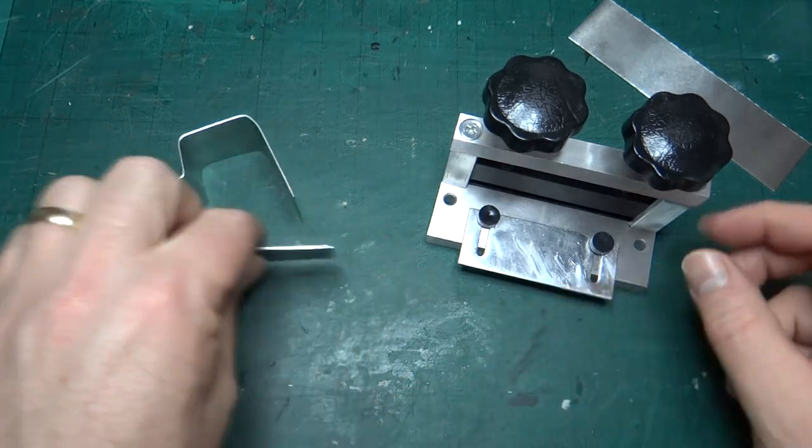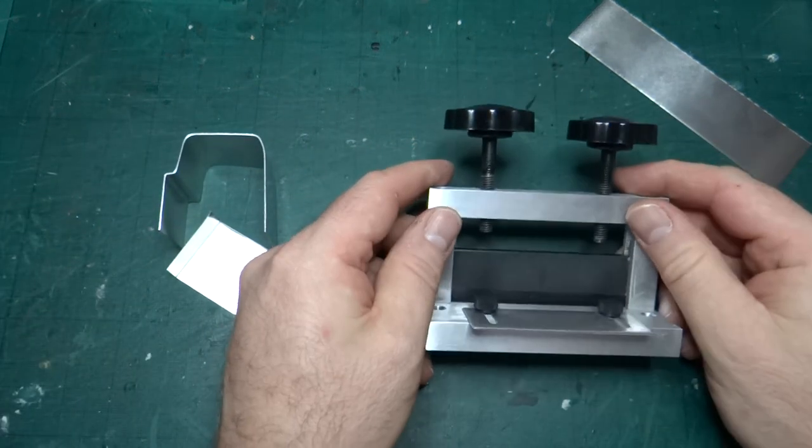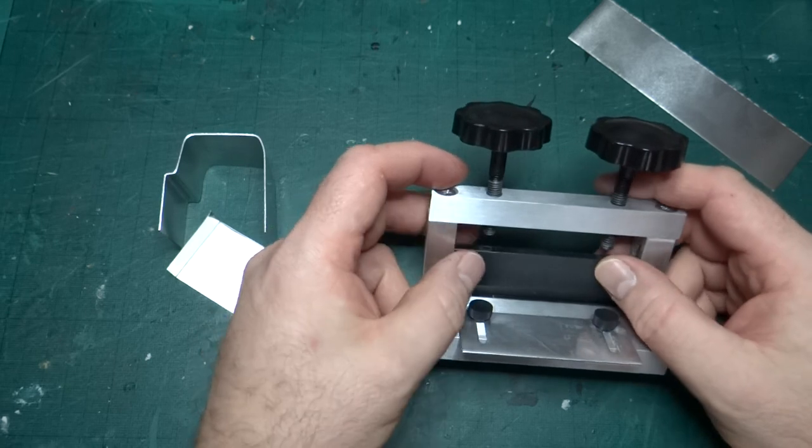But for now, that's the miniature metal bending brake that I bought from Kronos Engineering Tools.